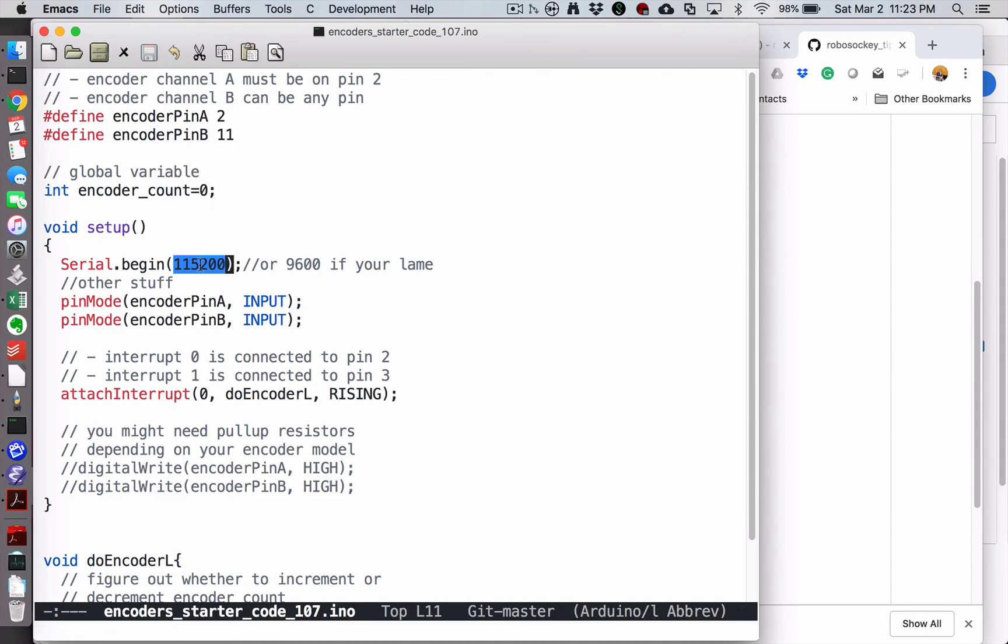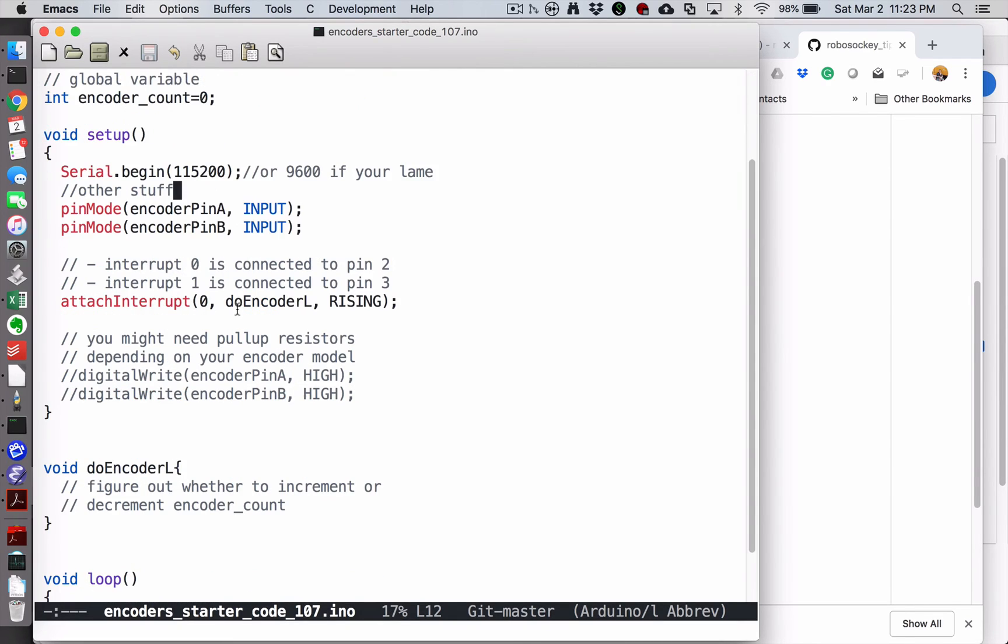Then in my setup function, I'm starting my serial. You can use any baud rate that you like. If you like going slower and have lots of patience, you could do something less. I'm a big fan of 115200. I'm defining my two encoder pins to be inputs. As I mentioned in the earlier part of the video, you may need to turn on pull-up resistors, and if you uncommented this code, it would do that. Then I'm attaching interrupt zero to the function doEncoderL, and we're going to do that on rising edges.